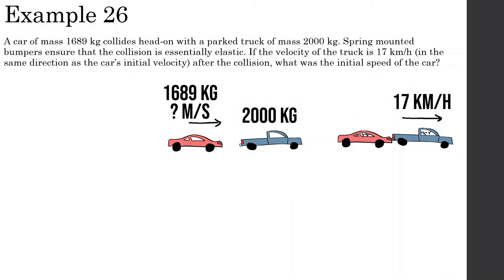Example 26: a car of mass 1689 kg collides head-on with a parked truck of mass 2000 kg. Spring mountain bumpers ensure the collision is essentially elastic. If the velocity of the truck is 17 km/h in the same direction as the car's initial velocity after the collision, what was the initial speed of the car? We're looking for V1, and we'll call the truck's initial velocity V2, the car's final velocity V1 final, and the truck's final velocity V2 final.